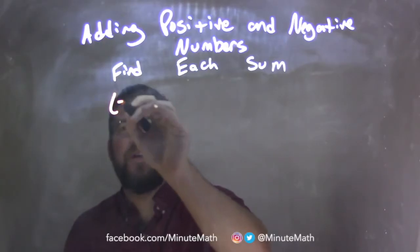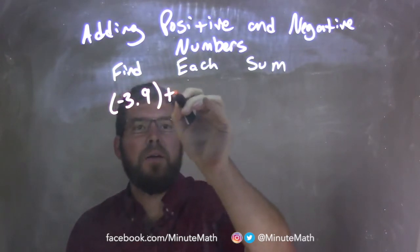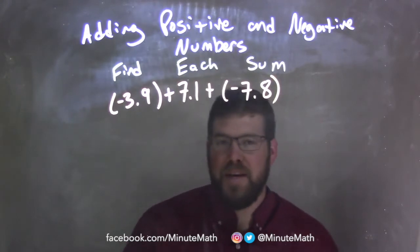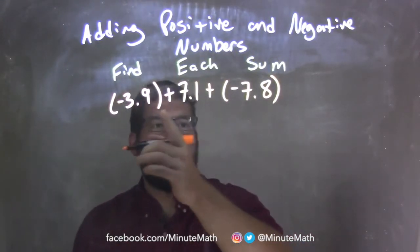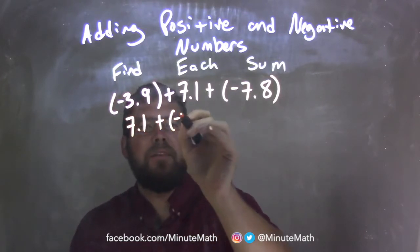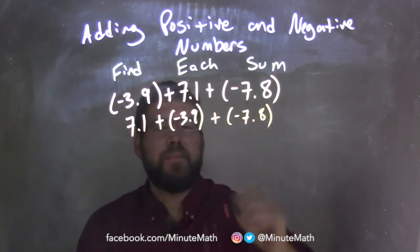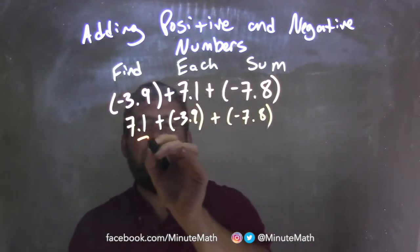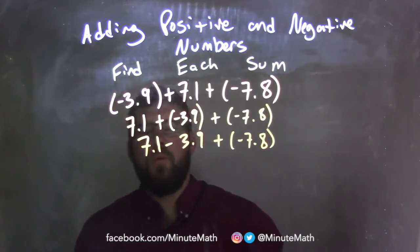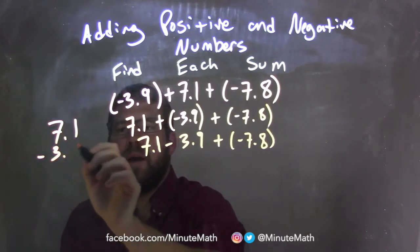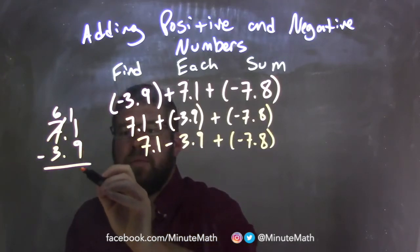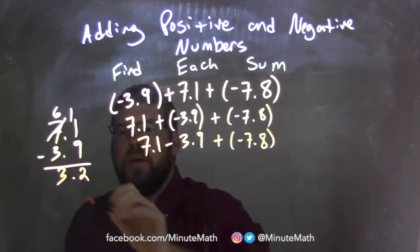Negative 3.9 plus 7.1 plus negative 7.8. I look at negative 3.9 and 7.1 first — that's the same as 7.1 plus a negative 3.9, and adding a negative is subtraction. So 7.1 minus 3.9: I turn the 7 to 6 and the 1 becomes 11. 11 minus 9 is 2, and 6 minus 3 is 3. So now I have 3.2.